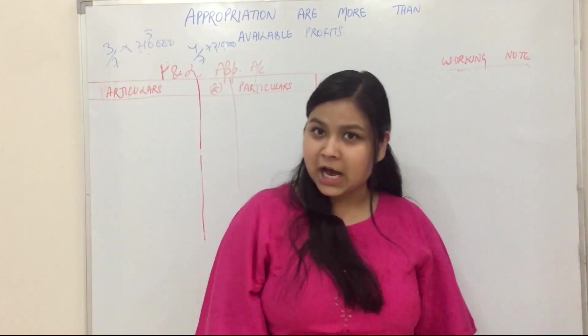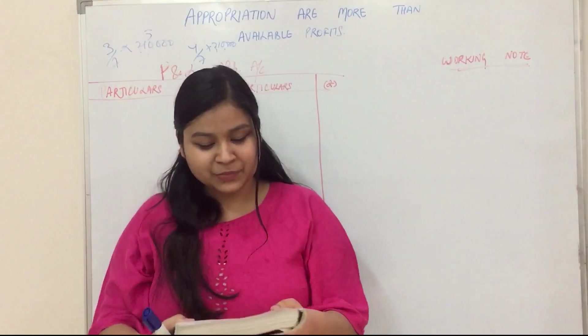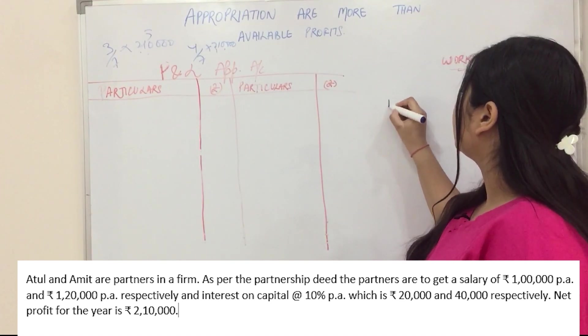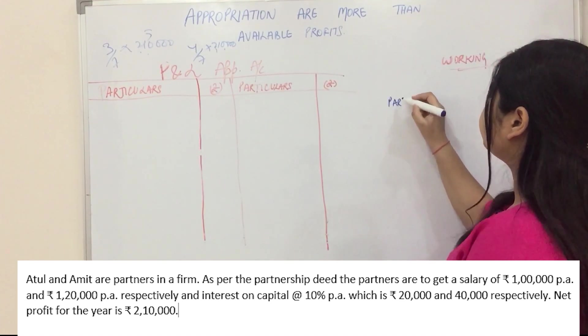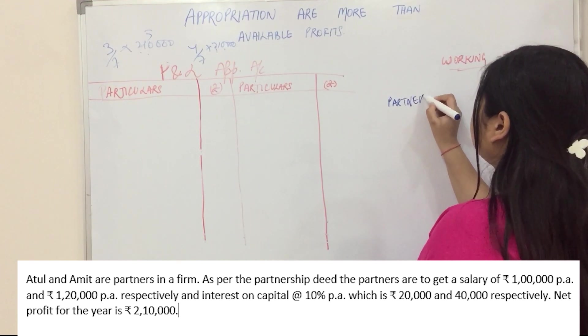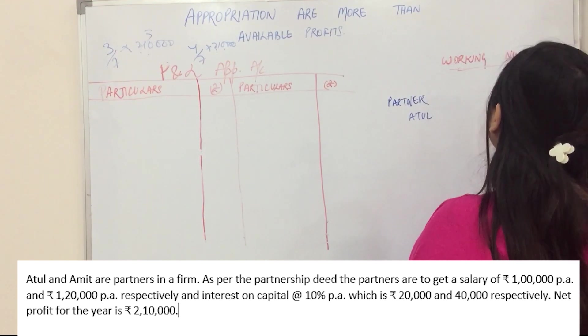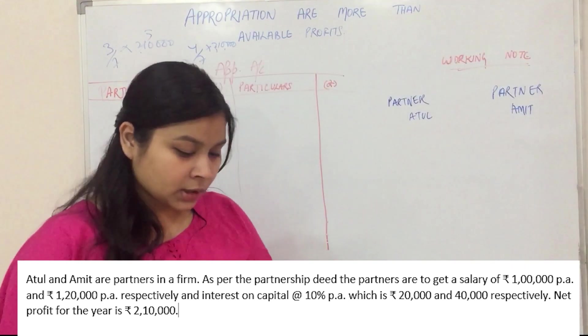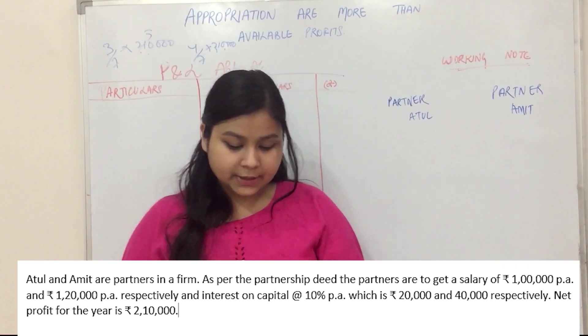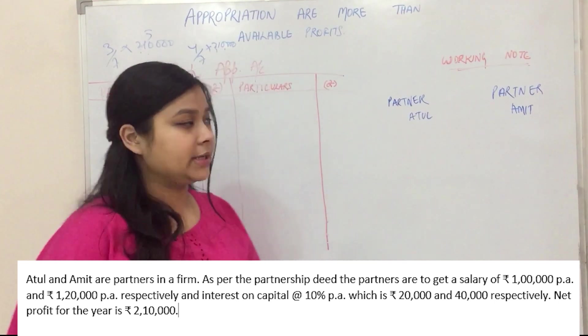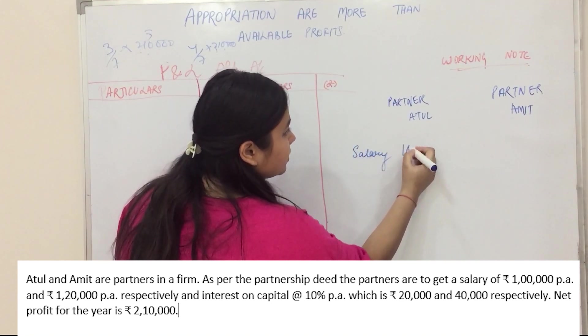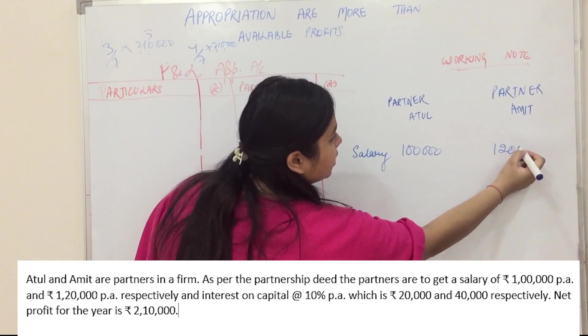The question will be on the screen. Atul and Amit are partners in a firm. There are 2 partners: Partner Atul and Partner Amit. As per the partnership deed, the partners are to get salary of 1,00,000 and 1,20,000. According to partnership deed, they had to get salary of 1,00,000 Atul and 1,20,000 Amit.